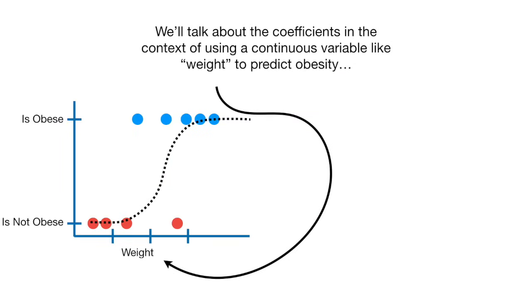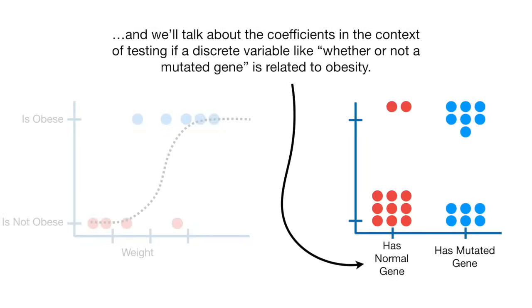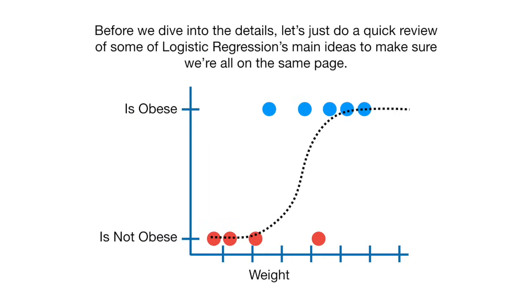We'll talk about the coefficients in the context of using a continuous variable, like weight, to predict obesity. And we'll talk about the coefficients in the context of testing if a discrete variable, like whether or not a mouse has a mutated gene, is related to obesity. Before we dive into the details, let's do a quick review of some of logistic regression's main ideas to make sure we're all on the same page.